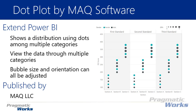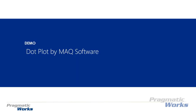As far as orientation goes, if you want to change it between vertical and horizontal, you can actually change the chart orientation inside the format section. We'll take a look at that, but let's get started — let's walk you through how you can import and use the dot plot by MAQ software and then walk you through an example of using it inside of the Power BI desktop.